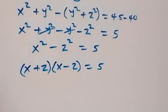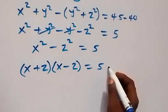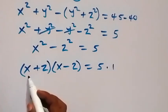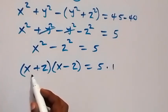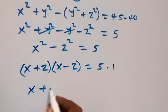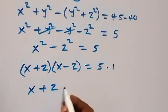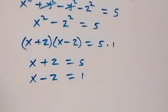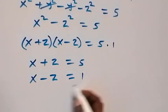We can write this as 5 times 1. Because the first bracket will be greater than the second bracket, x plus z equals 5 and x minus z equals 1.